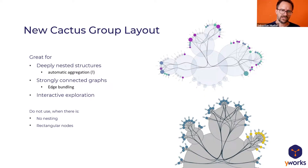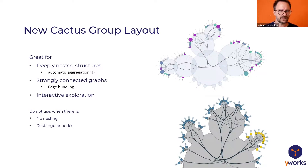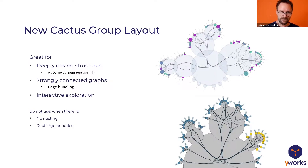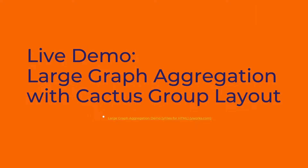First, the new Cactus Group Layout — you can probably guess where the name comes from. There was a paper that described the idea for the cactus-like visualization, but we completely re-implemented the algorithm from scratch so that it can now support directed edges and labeling, guarantee overlap-free node placement, and many more features.